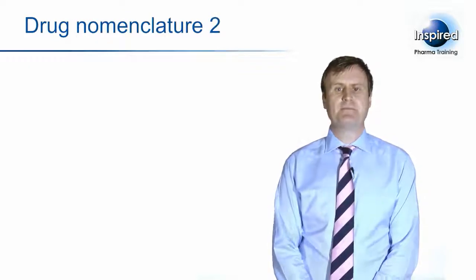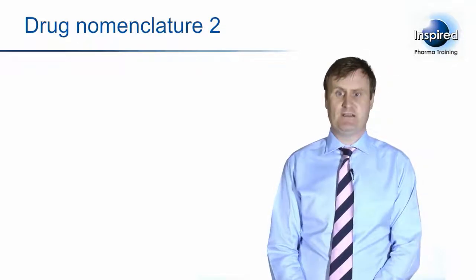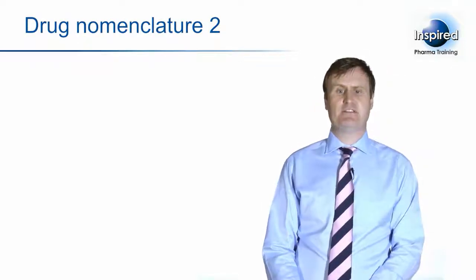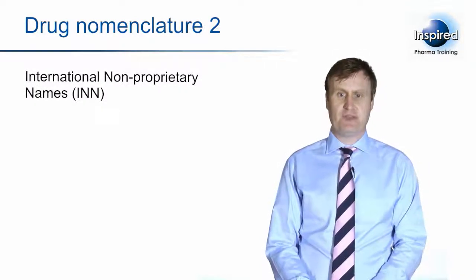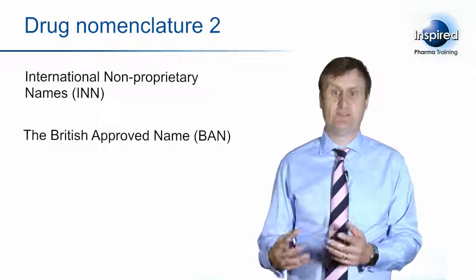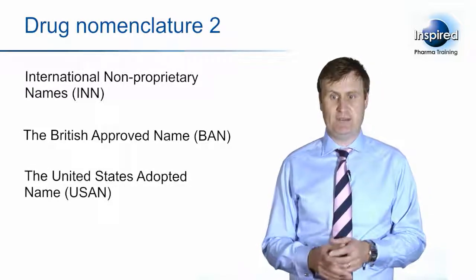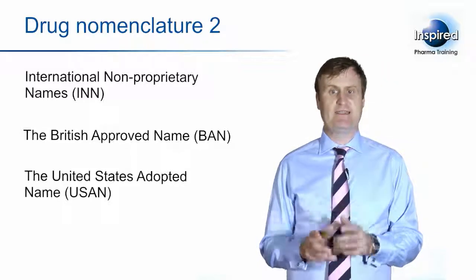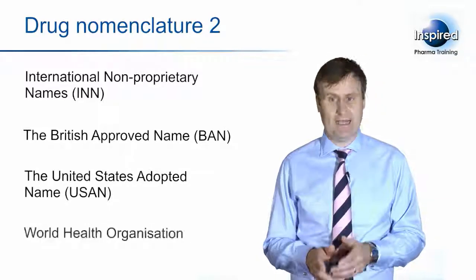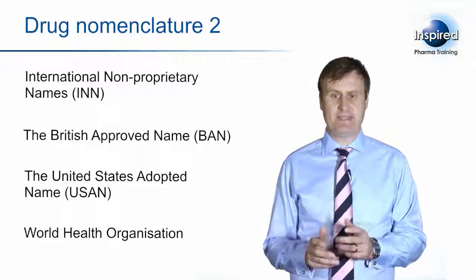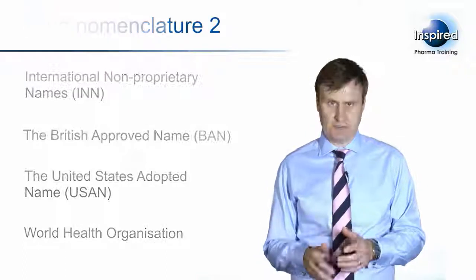The active ingredient must be described to the regulatory authorities using one of three systems of drug nomenclature. Historically, these are referred to as the International Non-Proprietary Names, the British Approved Names — which are now synonymous with the International Non-Proprietary Names — and the United States Adopted Name, which is also coordinated by the International Non-Proprietary Names. The source of the INN is the World Health Organization, who regularly update the list. The INN is becoming the most commonly used system.